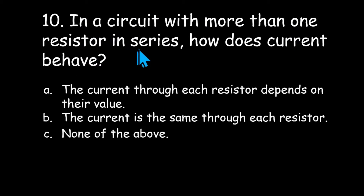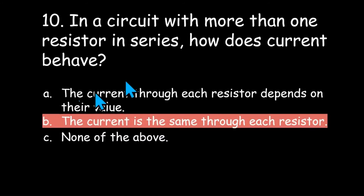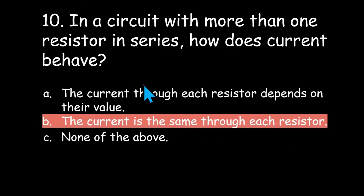In a circuit with more than one resistor in series, how does current behave? The current through each resistor depends on their value, the current is the same through each resistor, or none of the above? The answer is B: the current is the same through each resistor. If you have a series circuit with more than one resistor, the current is the same through the entire circuit — the amount going in equals the amount coming out, just like a water hose.